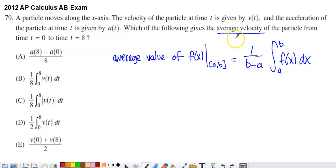Which of the following gives the average velocity of the particle from time zero to time eight? So I read average velocity and right away I think, well, they're telling me something about the velocity function.